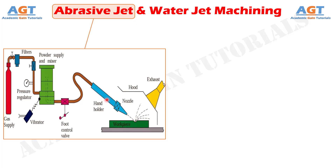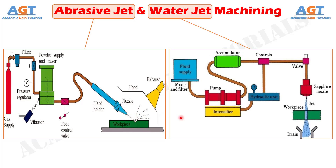In water jet machining, a high velocity jet of water is used to remove material. A fluid pump is used to enormously increase water pressure, as high as 2500 to 4000 bar. This pressurized water is then discharged with the help of a small diameter nozzle that converts the pressure energy into kinetic energy.